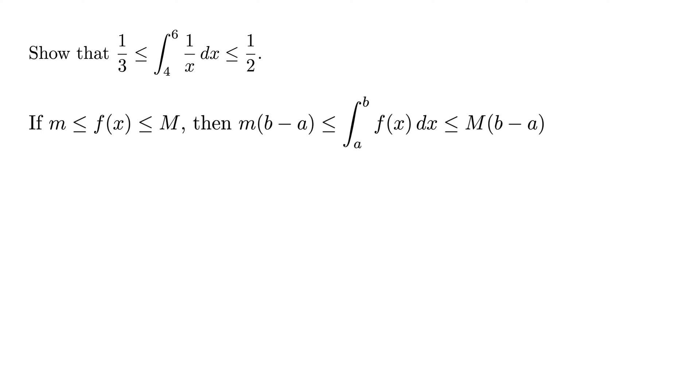Well, our function is 1/x, so we can pretty quickly get the minimum and maximum for that on the interval 4 to 6. The minimum will be 1/6, since that's the smallest possible number in that interval, and the maximum will be 1/4. So thus we've defined our little m, 1/6, and our big M, 1/4.